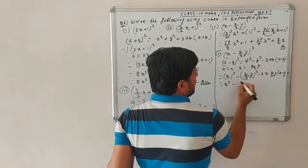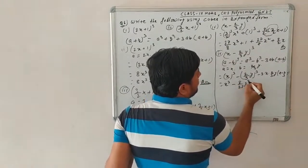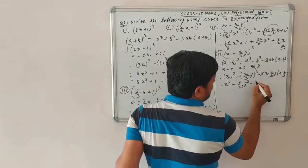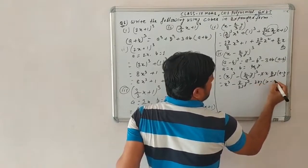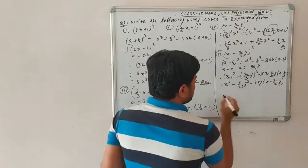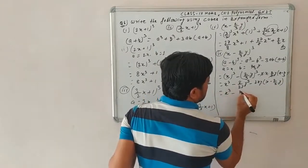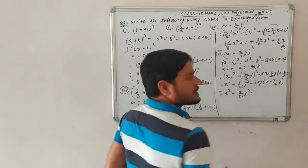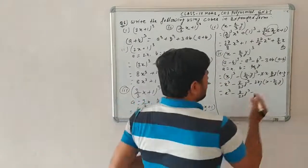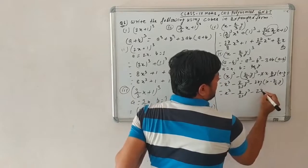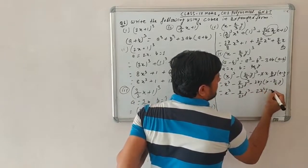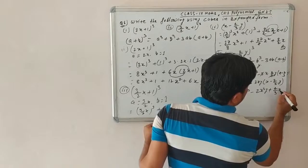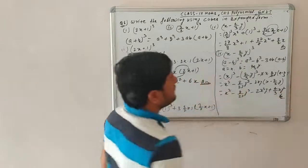Substituting: x³ − (2/3·y)³ − 3·x·(2/3·y)·(x − 2/3·y). This gives x³ − 8/27·y³ − 2xy(x − 2/3·y). Expanding the last term: constant times constant gives 2, and x·x = x²·y; with minus times minus becoming plus, we get +4/3·xy². So the answer is x³ − 8/27·y³ − 2x²y + 4/3·xy².